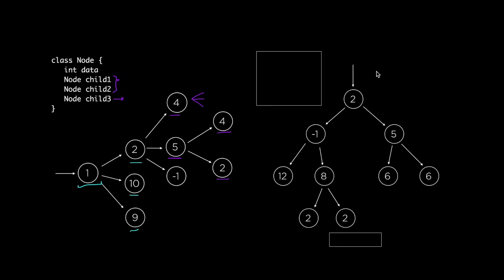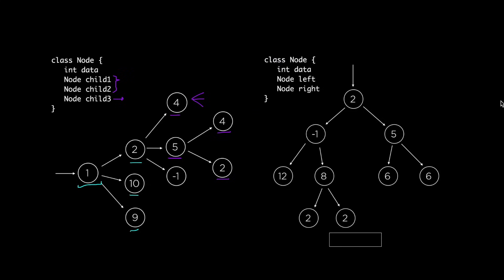Now let's take a look at another example of a tree. This one is drawn from top to bottom instead of left to right, but it has the same kind of structure. The more important difference is that each node has at most two children here, so the class of each node might look like this one — we have integer data just like before, but now we have only two children which we're calling left and right. When a tree has at most two children it's called a binary tree.